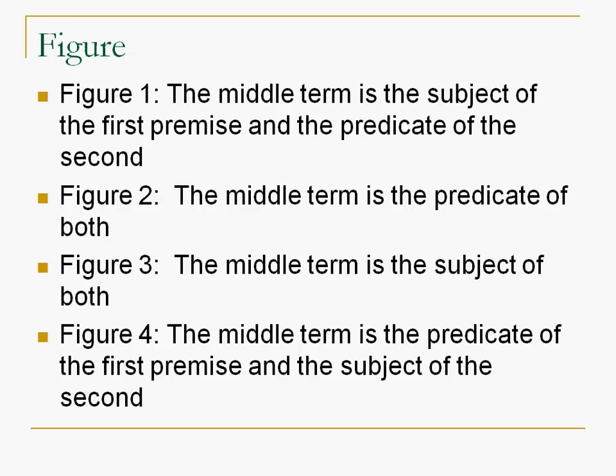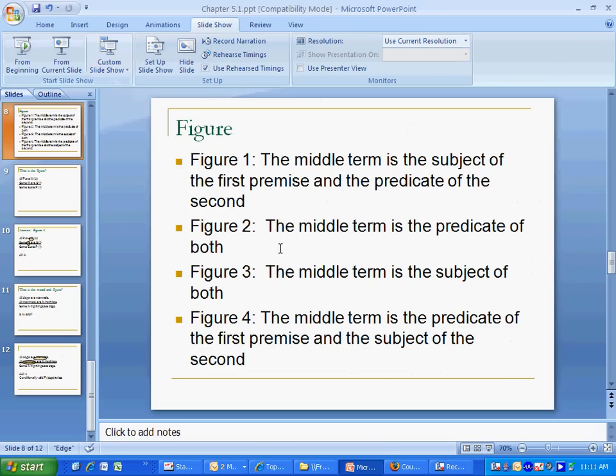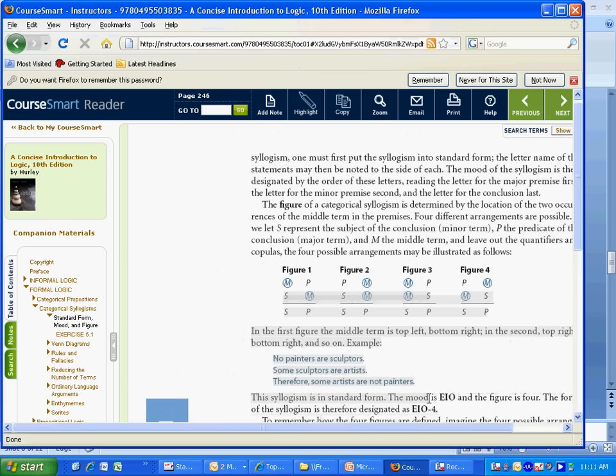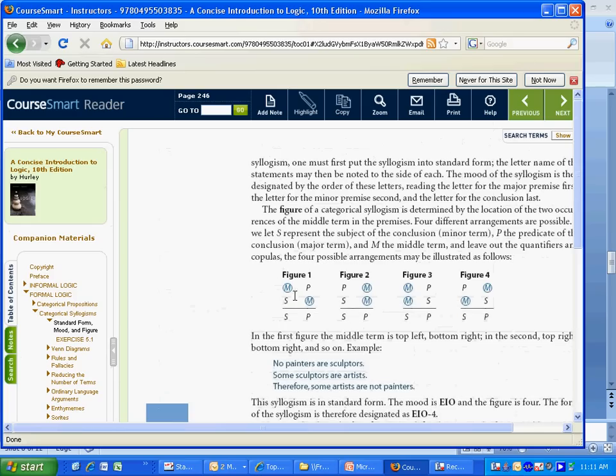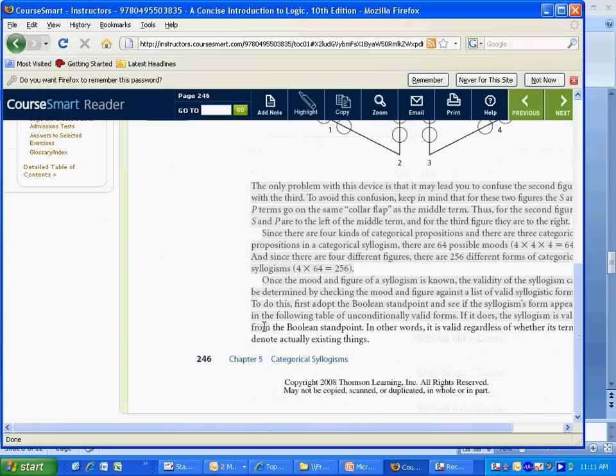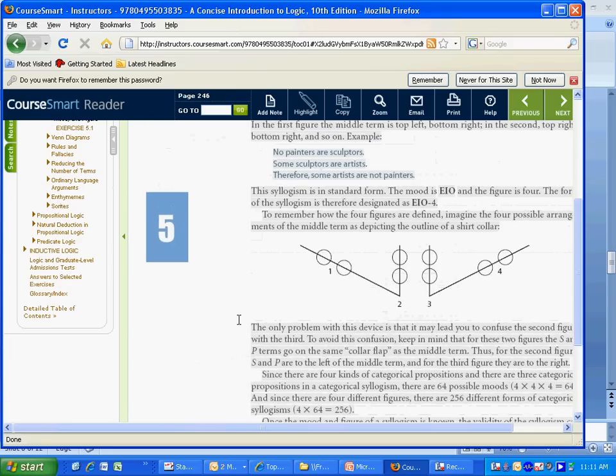So I'm going to get out of the PowerPoint and go to our textbook. And this is on page 246. And you can see, figure 1, middle term is here and here. Figure 2, it's predicate of both, figure 3, subject of both, and figure 4, here and here. So remember here, page 246, and that's going to be one of your best friends this semester, or at least for the next week or so.